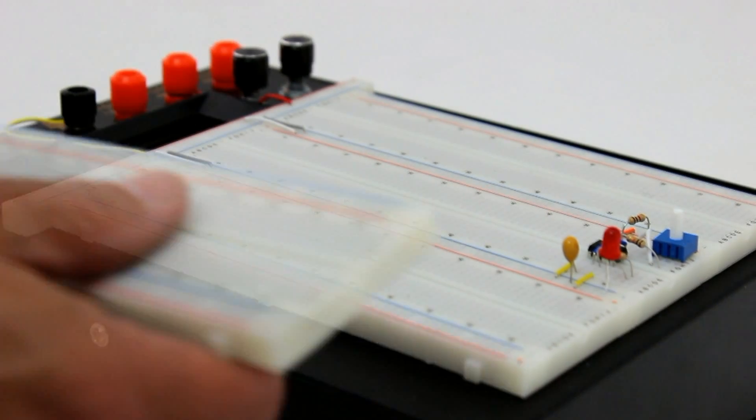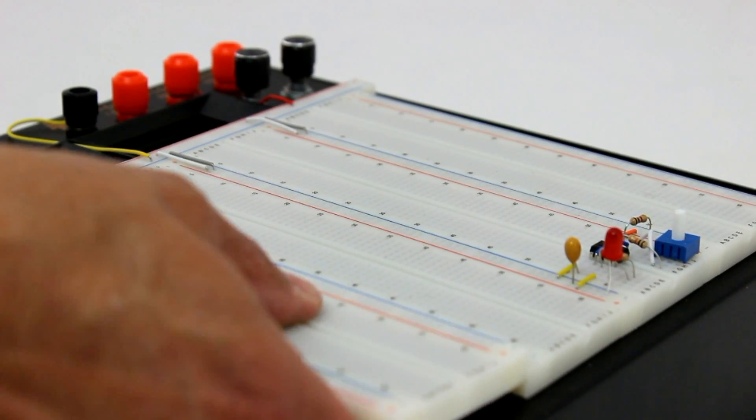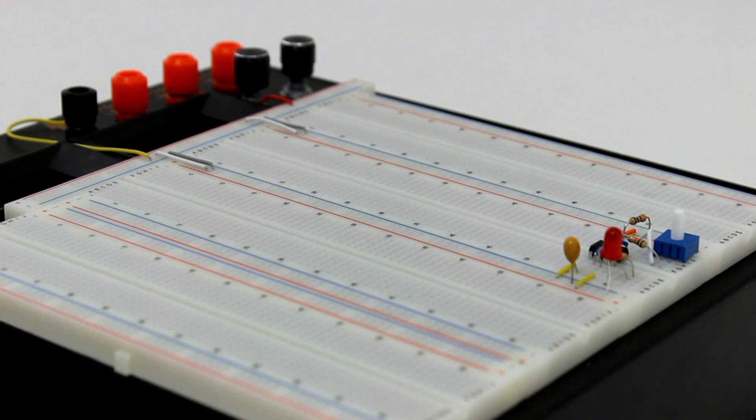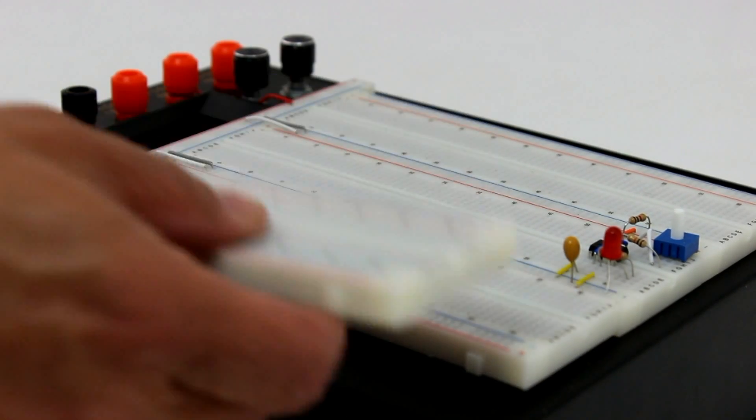Many breadboard units are made up of several smaller blocks to accommodate more complex and extensive circuitry than what is possible with a single unit.